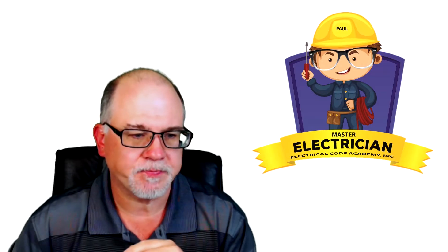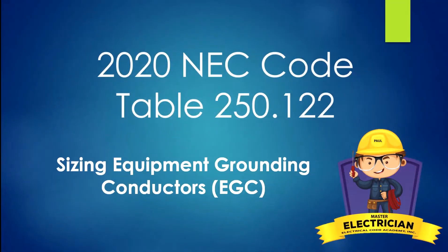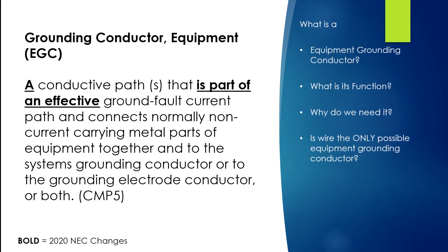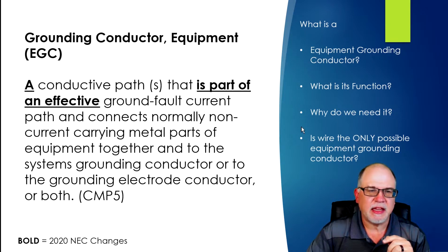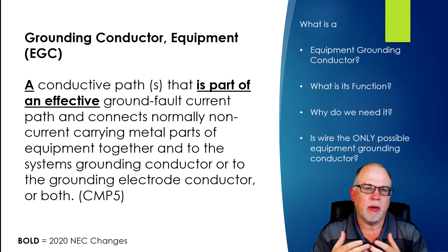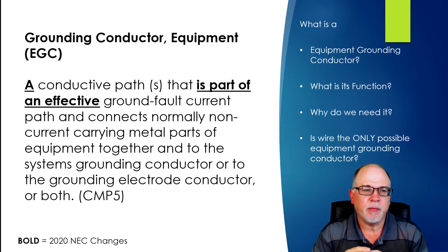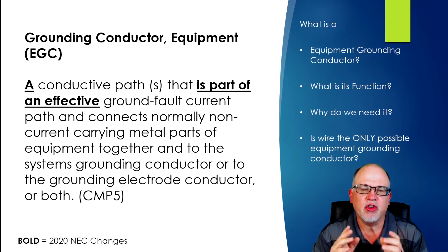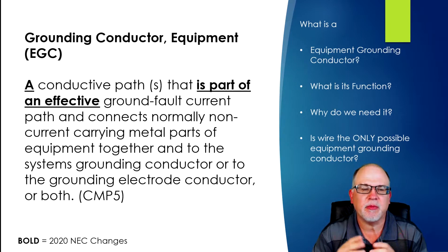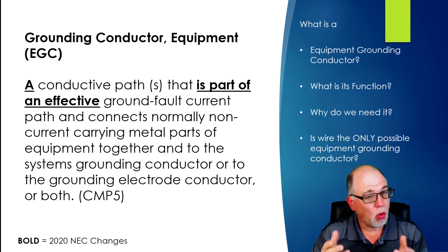Here, we're talking about simply sizing an equipment grounded conductor based on some principles of overcurrent device size and the utilizing of table 250.122. That's all we're going to deal with in this video. First things first, as with anything, we have to understand the definition of what an equipment grounded conductor is. It's a conductive path that is part of an effective ground fault current path and connects normally non-current-carrying metal parts of equipment together and to the system's grounded conductor or to the grounding electrode conductor, or both.